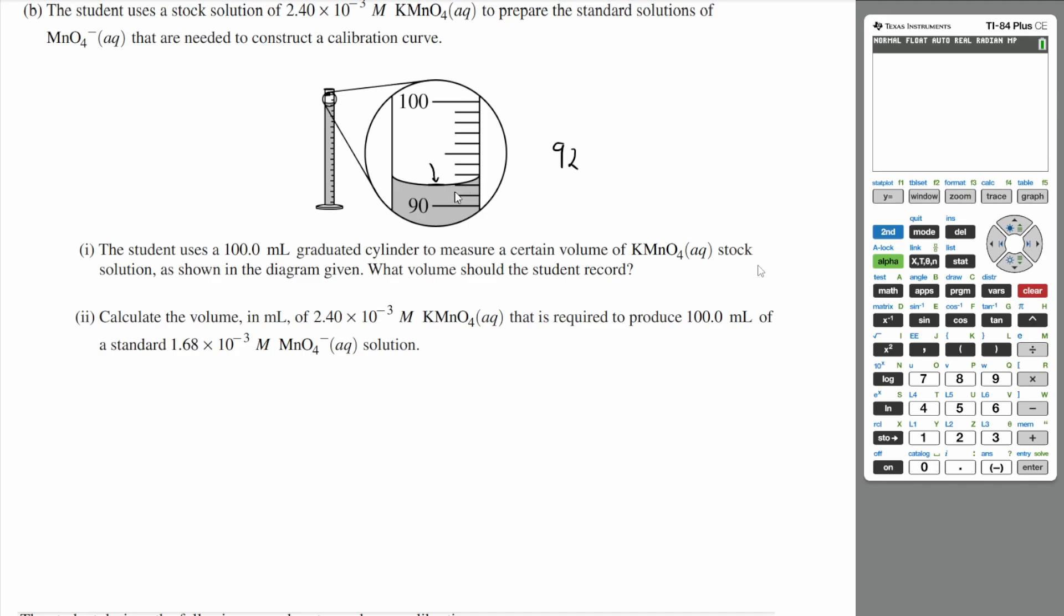So if you look here, the meniscus looks like it's exactly at 92. So we can say it's 92.0 mL. So what volume should the student record? It's going to be 92.0 milliliters.